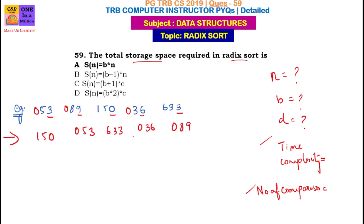Okay, the first level of comparisons will be done at the ones place, then we compare at the tens place. On the left side, there are 5, 3, and 8.